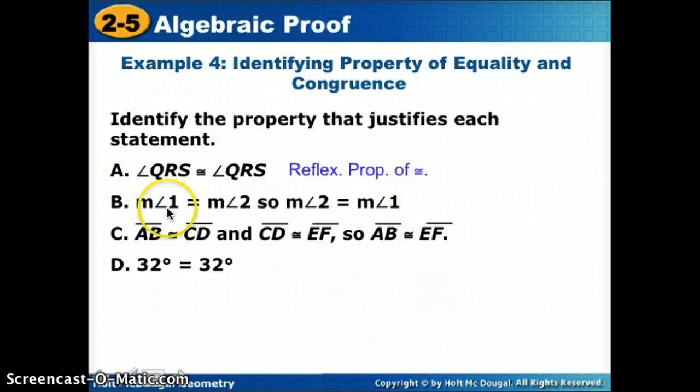Now if we said the measure of angle 1 is equal to the measure of angle 2, so measure of angle 2 is equal to the measure of angle 1, well, we took that equation and we flipped it over, just like if I was using a line of symmetry, whatever went second now goes first, whatever went first now goes second, and we're using equal signs, so that's the symmetric property of equality.